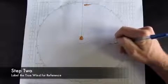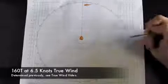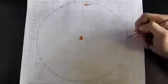Next you want to write down the true wind direction and speed. This was calculated in a previous training video. Today it's 160 degrees true at 6.5 knots. Also label this on the mow board just as a reminder, you're going to use this a little bit later on.